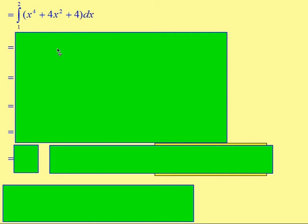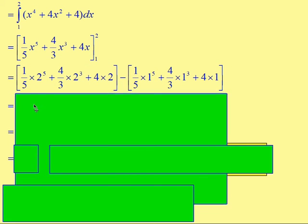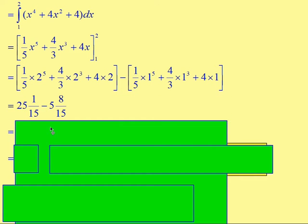Integrate between 1 and 2. We'll add 1 to the power, divide by the new power. Add 1 to the power, divide by the new power, and then just bring in your x there. So, sub in 2 and sub in 1. So you would end up with a fifth of 2 to the power of 5, plus 4 thirds of 2 to the power of 3, plus 4 times 2, and then take away, and then just replace the x's with 1. If you work out this bracket here, you end up getting 25 and 1/15th.